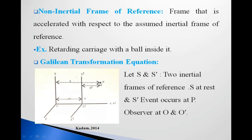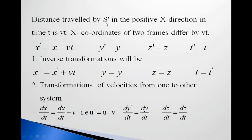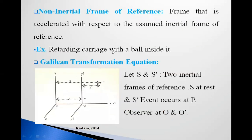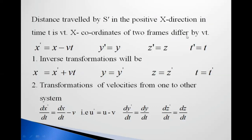An event occurs at point P. Its coordinates with respect to the S frame are x, y, z and with respect to the S' frame are x dash, y dash, z dash. The time coordinate with respect to S is t and with respect to S' is t dash. The distance traveled by S' in the positive x direction in time t is vt, so the x coordinates of the two frames differ by vt. Therefore: x dash = x − vt, y dash = y, z dash = z, t dash = t. The inverse transformations are: x = x dash + vt, y = y dash, z = z dash, t = t dash.